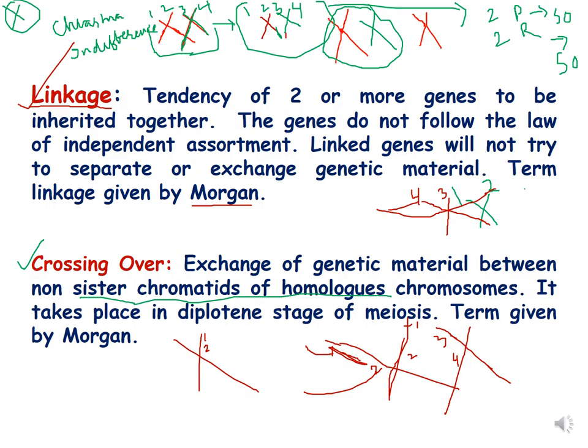What is linkage? Linkage is the tendency of two or more genes to be inherited together. The genes do not follow the law of independent assortment, and the linked genes will not try to separate or exchange genetic material. The term linkage was given by Morgan.